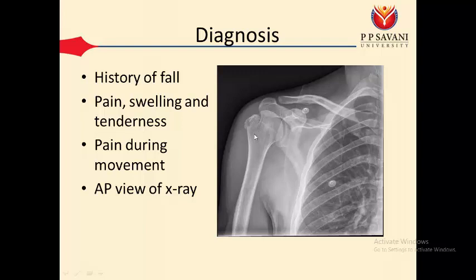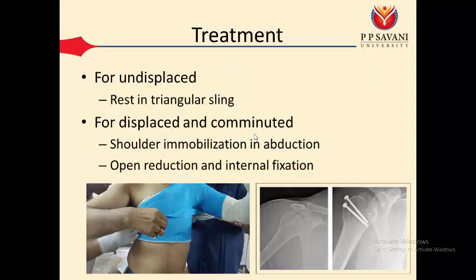For treatment of an undisplaced fracture, rest in a triangular sling with three to four weeks of immobilization is enough. For a displaced fracture, shoulder immobilization is given in the abduction position. The reason is that when the shoulder is in abduction, the supraspinatus muscle is in a shortened position, so it will not pull on the greater tuberosity fragment. This prevents further displacement, so immobilization is given in the abduction position.